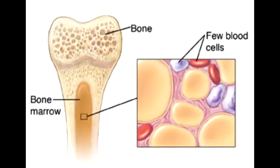The symptoms of aplastic anemia are all due to pancytopenia. Because of a decrease in platelets, you would have bleeding disorders. Because of a decrease in white blood cells, you would have infections. And of course there is going to be anemia. The symptoms include fatigue, malaise, pallor, purpura, mucosal bleeding, petechiae, and infections.